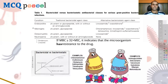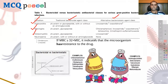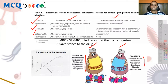For endocarditis, meningitis, and osteomyelitis, alternative bacteriostatic agents are also equally effective as traditional bactericidal agents. Examples of bacteriostatic agents include chloramphenicol, erythromycin, clindamycin, sulfonamides, tetracycline, and trimethoprim. Bactericidal agents include aminoglycosides, beta-lactams, vancomycin, quinolones, rifampicin, and metronidazole.